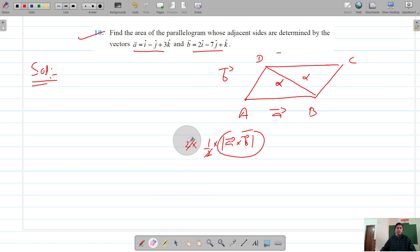We will try to find this. The area of the parallelogram is just the magnitude of the cross product of the two adjacent sides.